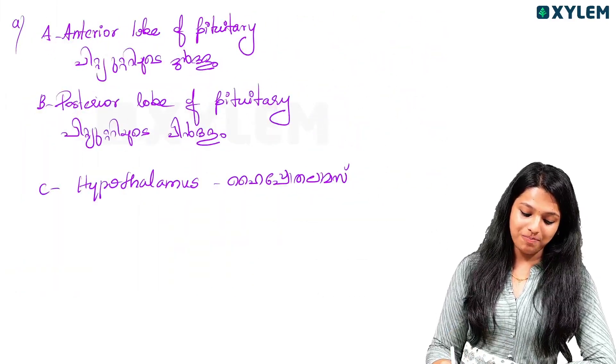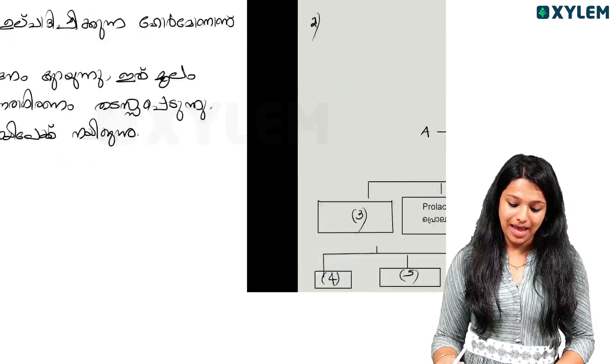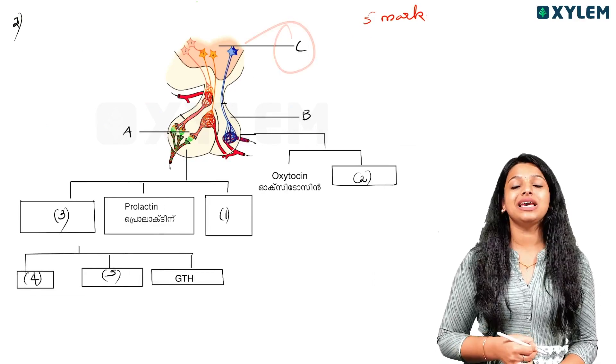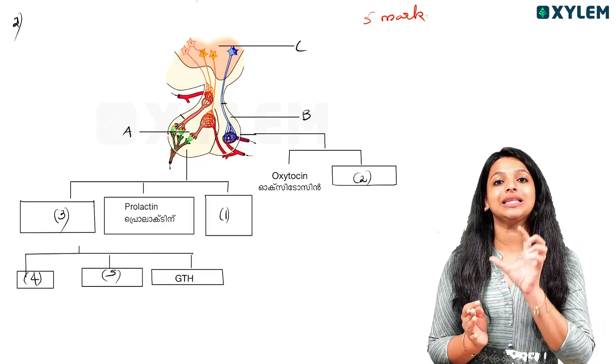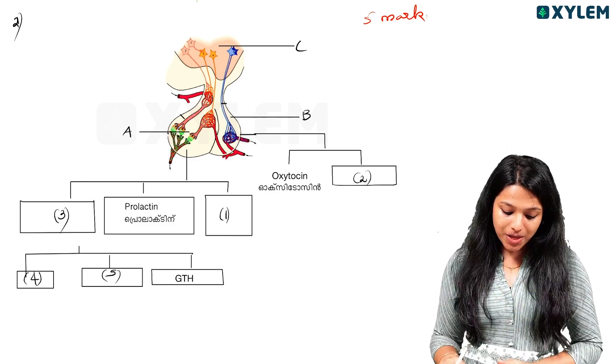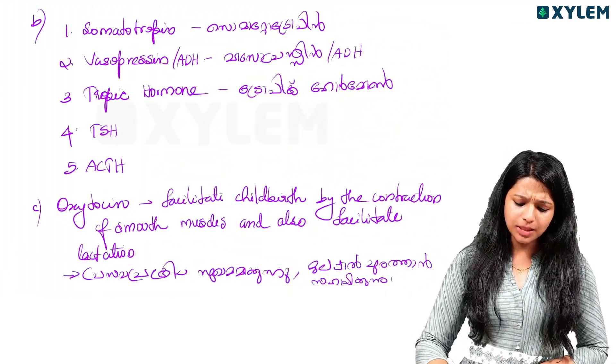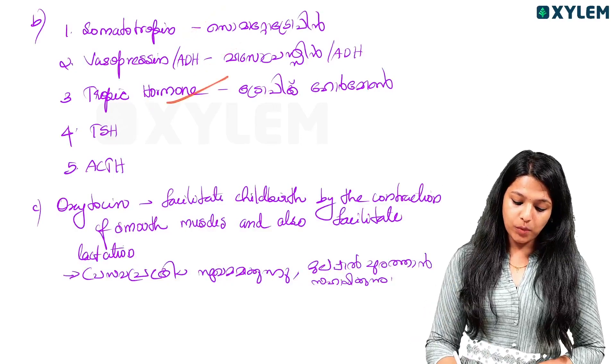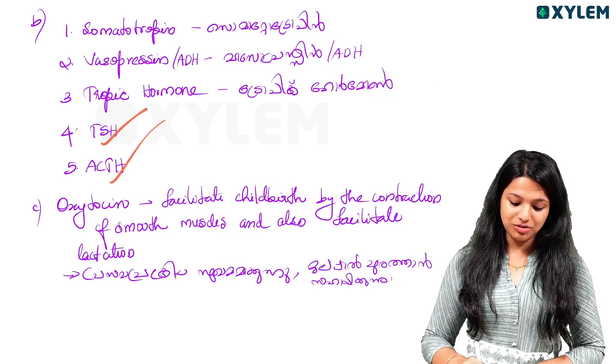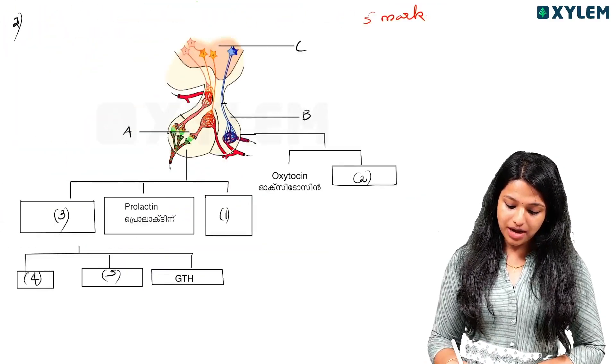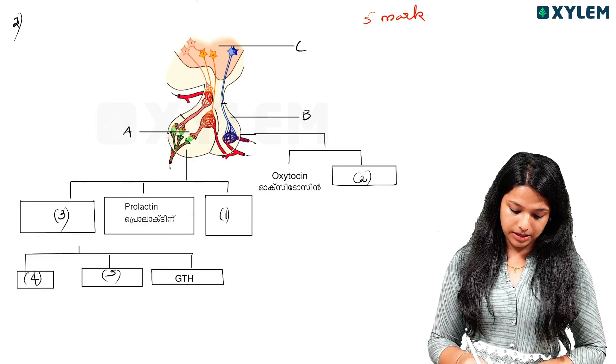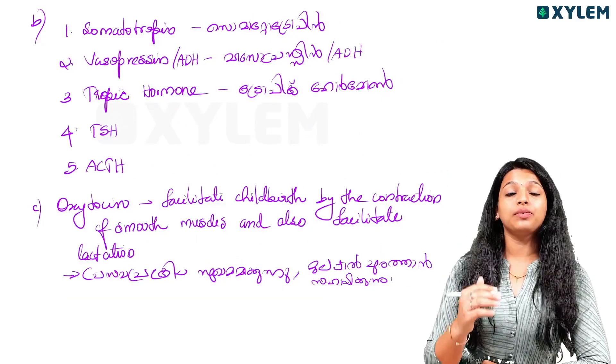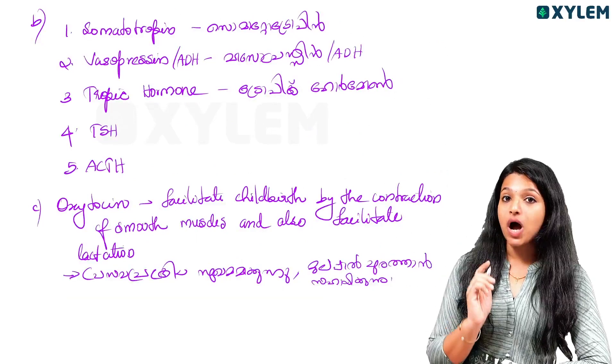Now, we are looking for A, B, C. A is Anterior Lobe of Pituitary. B, Posterior Lobe of Pituitary. C is Hypothalamus. Now, 1, 2, 3, 4, 5. 1 is Somatotropin. 2 is Vasopressin, ADH. 3 is Tropic Hormone. 4 TSH and 5 ACTH. Each list: Vasopressin is Tropic Hormone, and TSH and ACTH.